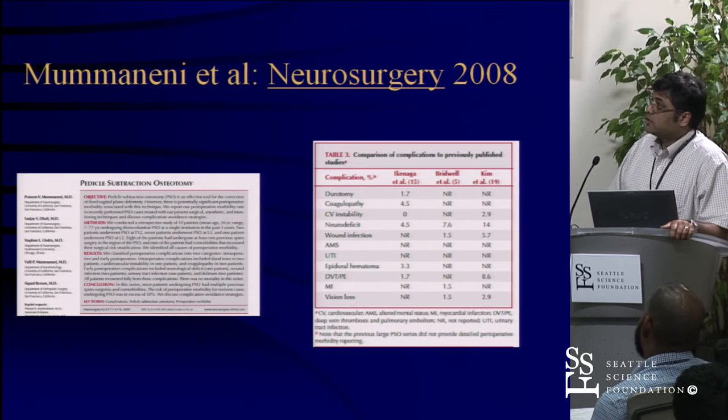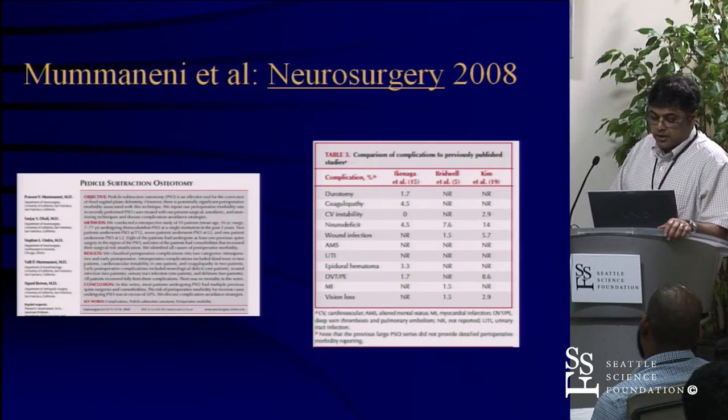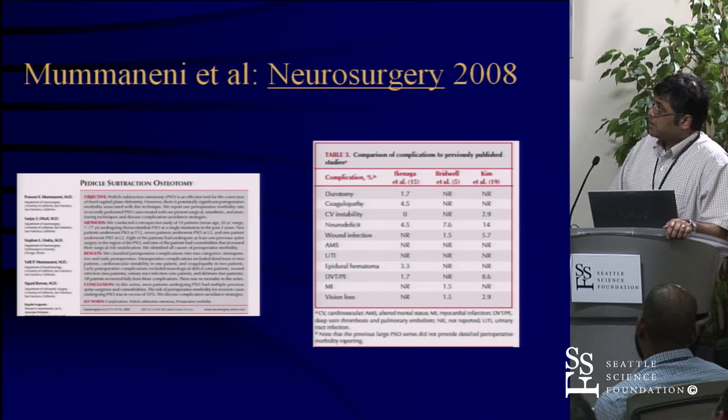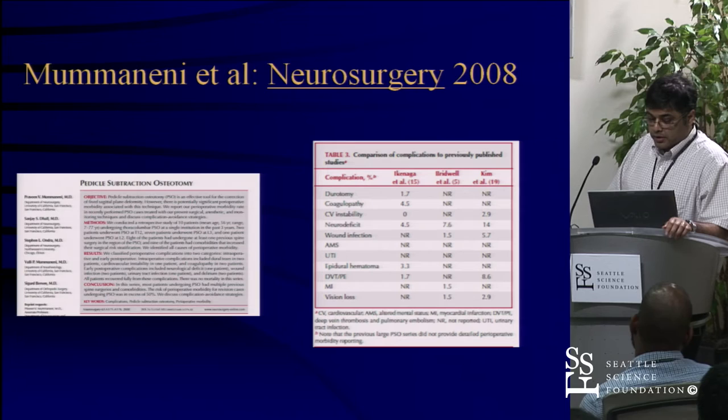We did a review of our population where we did PSOs and found plenty of complications — we're not alone. The group from St. Louis and several other groups have published a lot of complications including cardiovascular problems, neurological deficits, coagulopathies, wound infections, hematomas, DVTs, PEs, MIs, and really even vision loss. It's not an operation that people can get away with without some complication.